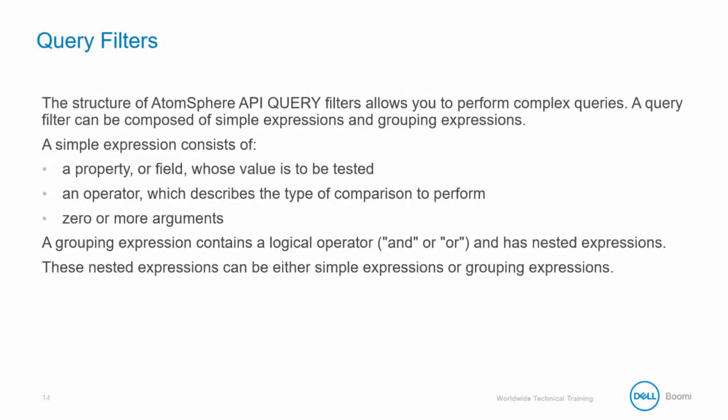The structure of the AtomSphere API query filter allows you to perform complex queries. A query filter can be composed of simple expressions and a grouping expression. A simple expression consists of a property or field whose value is to be tested, then an operator which describes the type of comparison to perform, and then the argument. A grouping expression contains a logical operator — either AND or OR — and has nested expressions within it. These nested expressions can be either simple expressions or other grouping expressions.